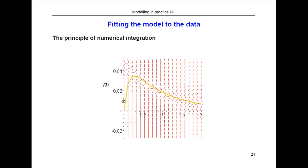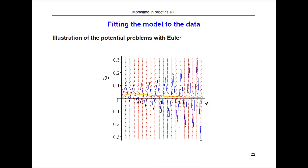If everything works fine you get a nice smooth curve like the yellow one here. But the problem with Euler forward — the reason you don't use it in practice — is that it's very easy to take too long steps. If you take too long a step you end up in the wrong place, immediately switch to a negative derivative, go to negative values, and quickly diverge. The numerical solution becomes completely wrong compared to the correct solution.